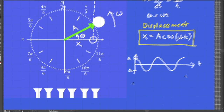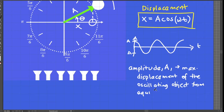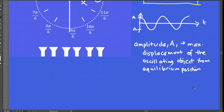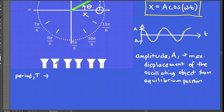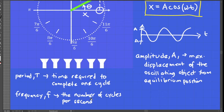Just a review: amplitude, symbolized by A, is the maximum displacement of the oscillating object from equilibrium position. Period, symbolized by T, is the time required to complete one cycle. Frequency, symbolized by f, is the number of cycles per second, usually measured in hertz (Hz), which is the SI unit of frequency. Frequency is mathematically expressed as the reciprocal of period.